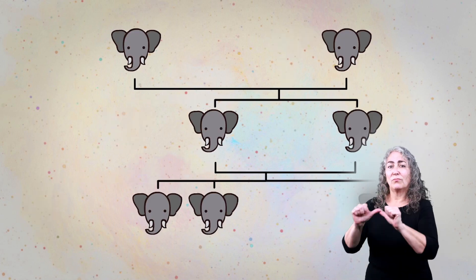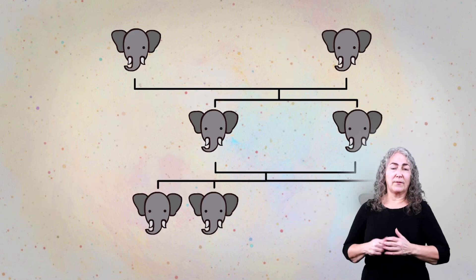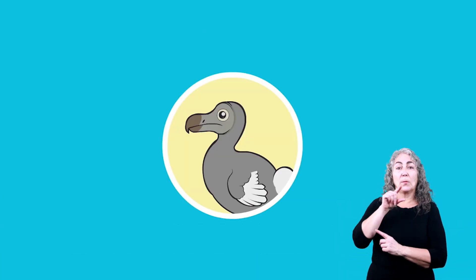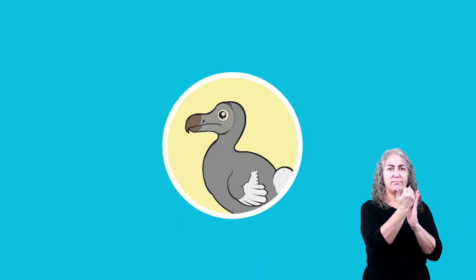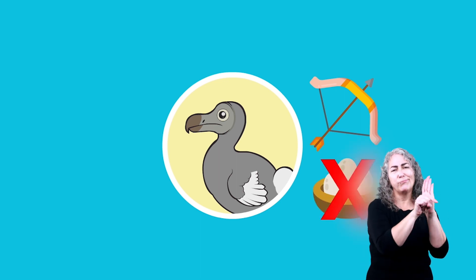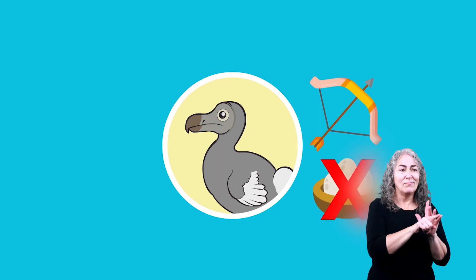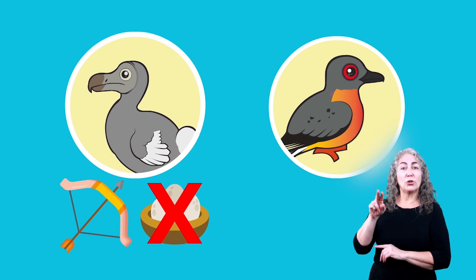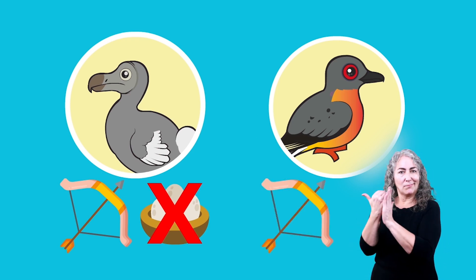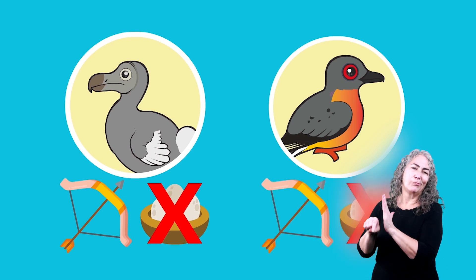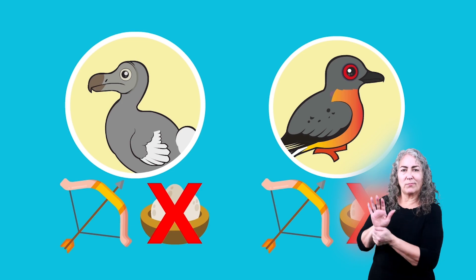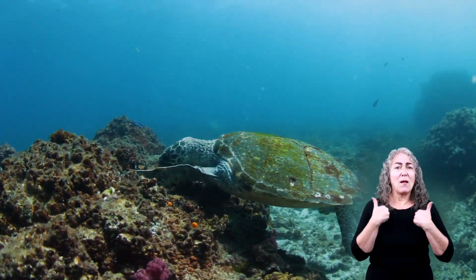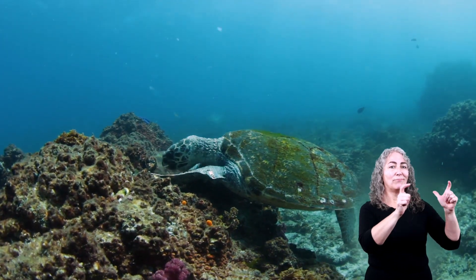Extinction also occurs due to the over hunting of species to the point where they can no longer reproduce enough young to survive. Here is an interesting fact: the dodo bird became extinct due to over hunting and because other animals moved into its habitat. The passenger pigeon also became extinct because of over hunting, along with the destruction of its habitat.